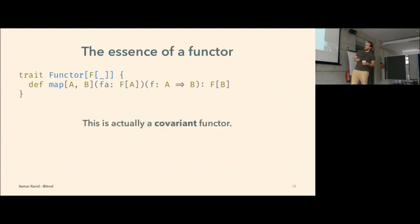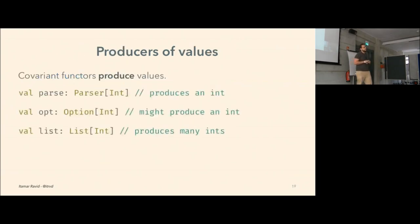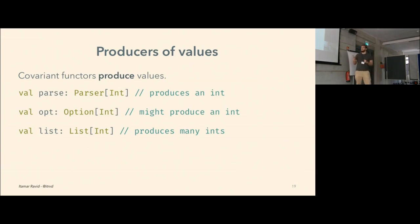Back to the type class definition — this is actually a covariant functor. We use it in our day-to-day as a plain old functor, but this is actually a covariant functor. This has some relation to subtype variance, which you know of with the plus and minus annotations on type parameters. Covariant functors are all about producing values. A parser will produce an int, an option might produce an int, and a list will produce many integers. The technical explanation is that the underlying type must have the type parameter appear only on the right-hand side of a function, but the intuition is that covariant functors are about producing values.